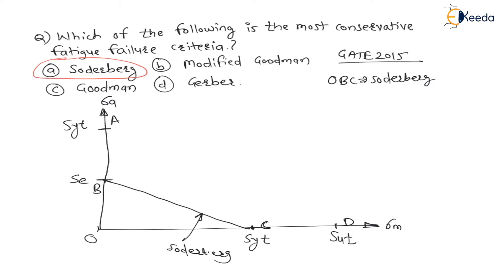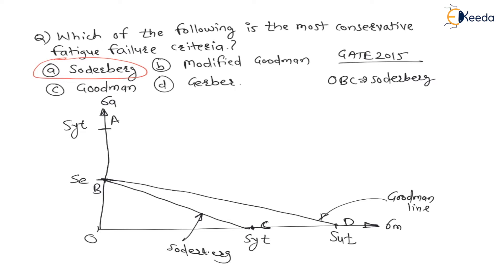If we join point B to point D — that is, SE on the y-axis to SUT on the x-axis — with a straight inclined line, then the region under this line is the Goodman region. The line is called the Goodman line, and the region O, B, D is the Goodman safe region.